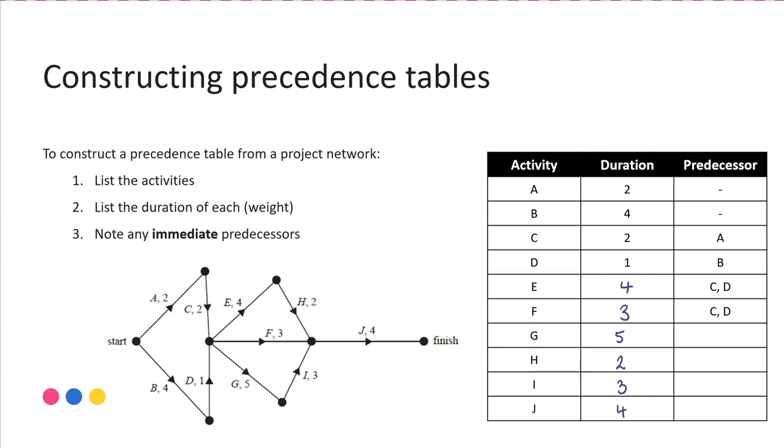Finally, we're looking at the predecessors. So we're making sure that we're noting down all of the activities that end at the vertex where this next activity commences. So if we're looking at activity G, we locate G on our network and check this vertex here, where G starts from. What activities are flowing into the end of there or finishing at that point? C and D. So they are what we call our immediate predecessors. So we put activity C and activity D.